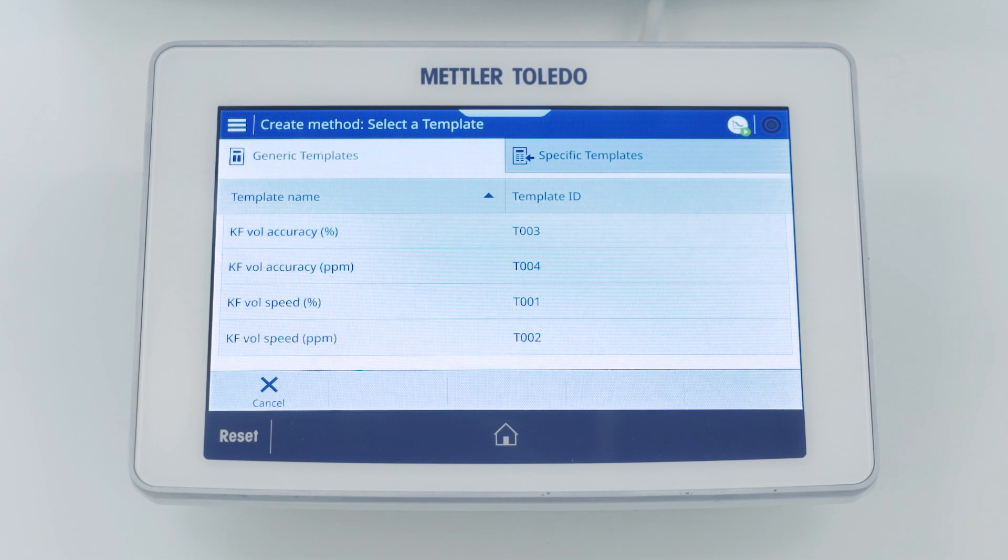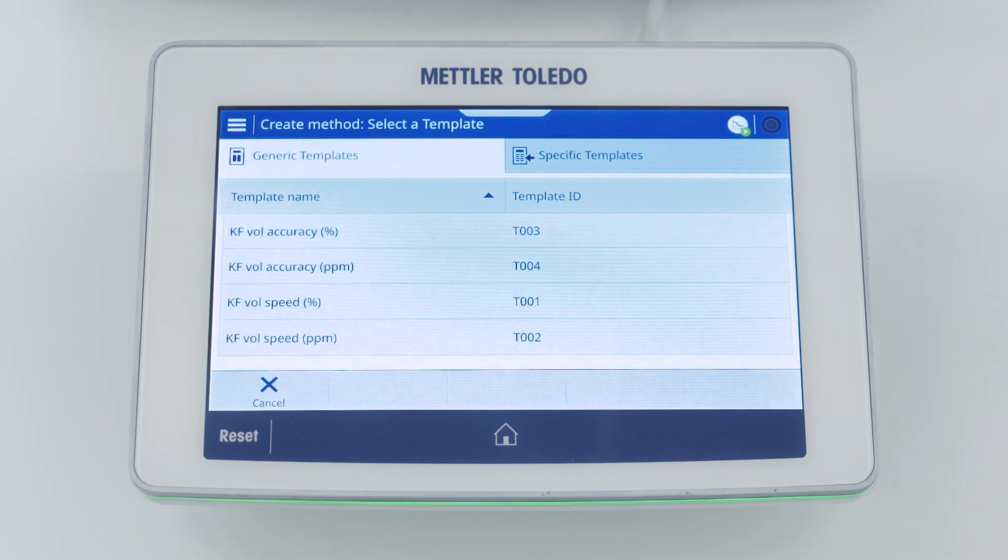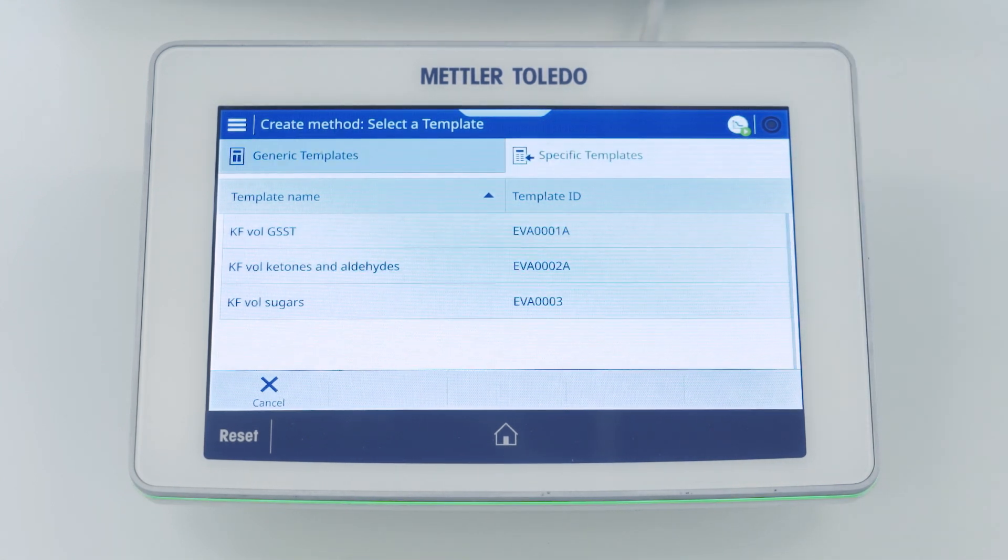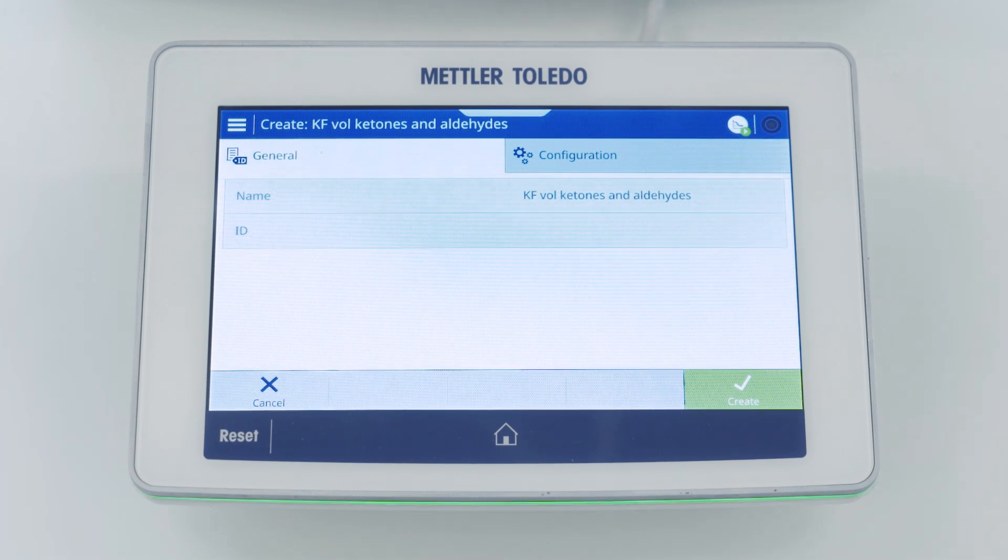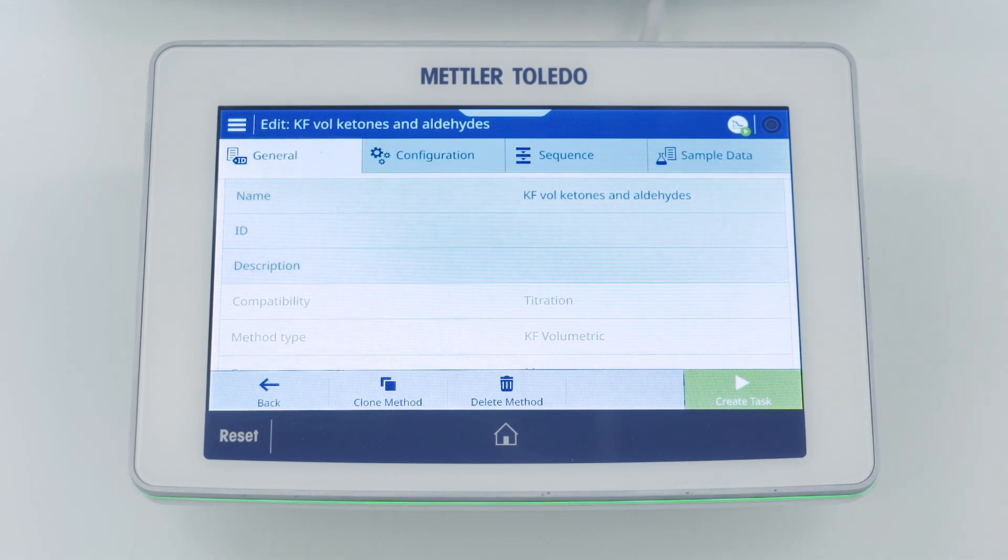All the methods are based on templates. Under specific templates we find a dedicated template for ketones and aldehydes which we're going to use. If we open the template all the parameters are pre-adjusted and the method will be ready to use. So we just create the method based on this information.